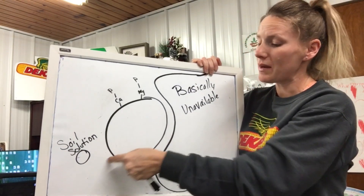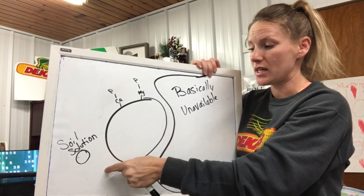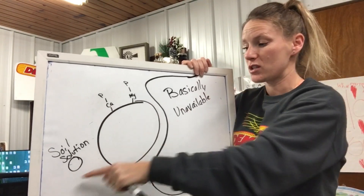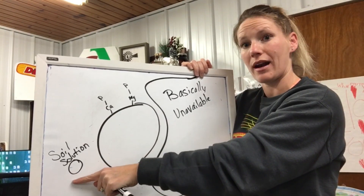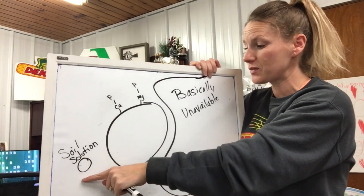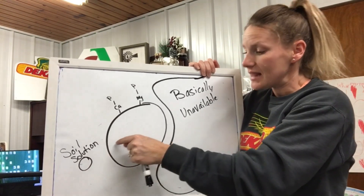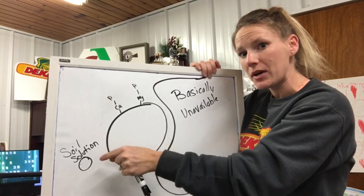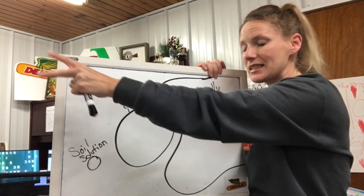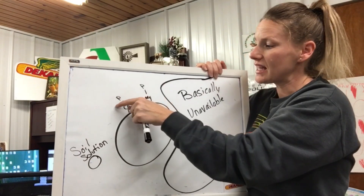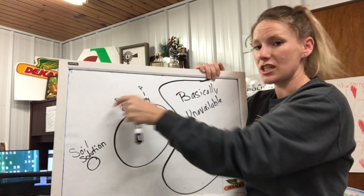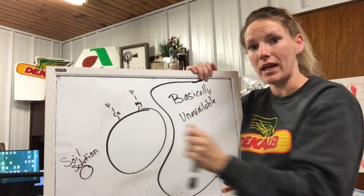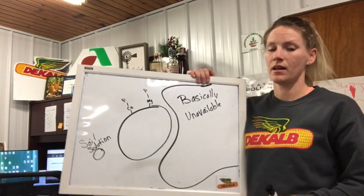The way we think about these two pools is that as the plant is pulling up the soil solution — the readily available phosphorus — it wants to keep kind of an equilibrium, a balance. So as the readily available pool is sucked up, the slowly available pool is going to start to shed off and go into the soil solution.